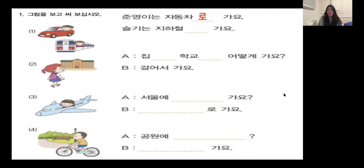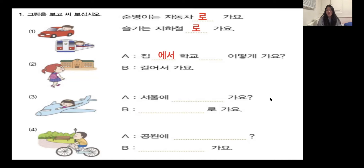Selgi는 지하철로 가요 — Selgi goes by the subway. The next one is a from-and-to question: 집[blank] 학교[blank] 어떻게 가요? We learned that 에서 means 'from' and 까지 means 'to.' So: 집에서 학교까지 어떻게 가요? — How do you get to school from home? 걸어서 가요 — she goes by walking. Number three: 서울에 [blank] 가요 — Seoul is a place, so 서울에 어떻게 가요? She's riding a plane, so the answer is 비행기로 가요.